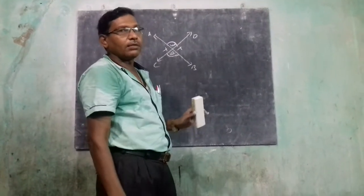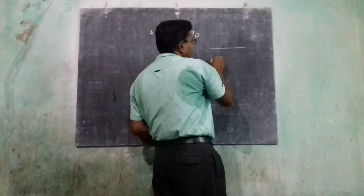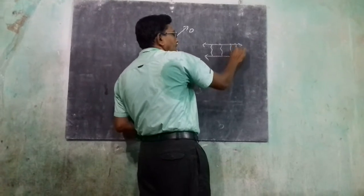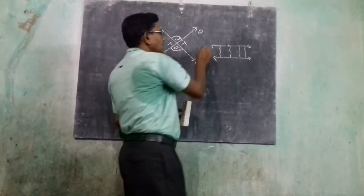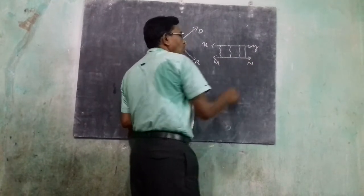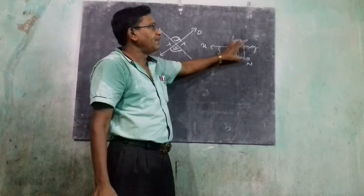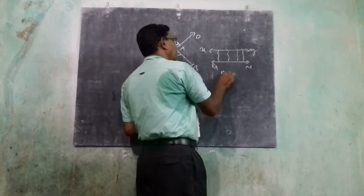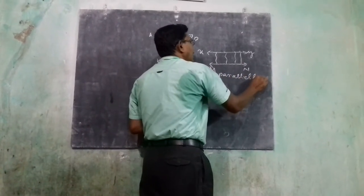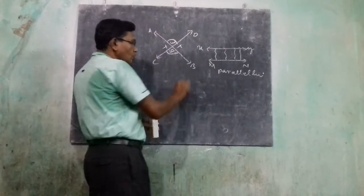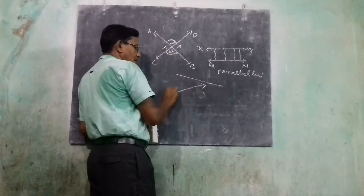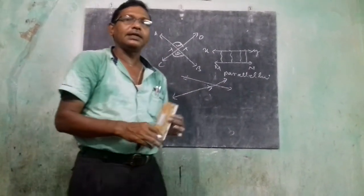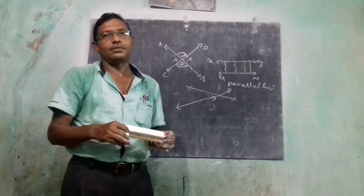What do we mean by parallel lines? When two lines never intersect each other and have equal distance between them, they are parallel. For example, lines XY and MN with equal distance and no intersection are parallel lines. Intersecting lines means two lines that cross each other — when two lines cross each other, they are known as intersecting lines.